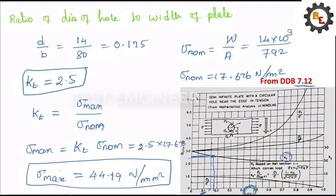If the hole is made in the plate, the stress produced will be 44.19 Newton per millimeter square. Suppose if we designed a component without containing this hole, the stress will be produced differently.